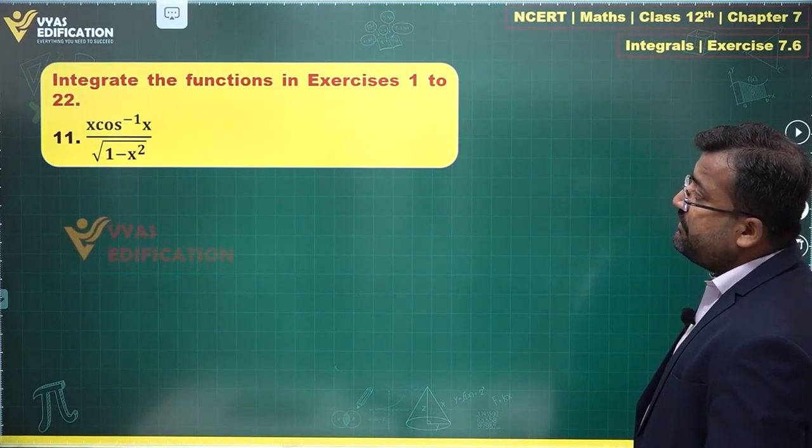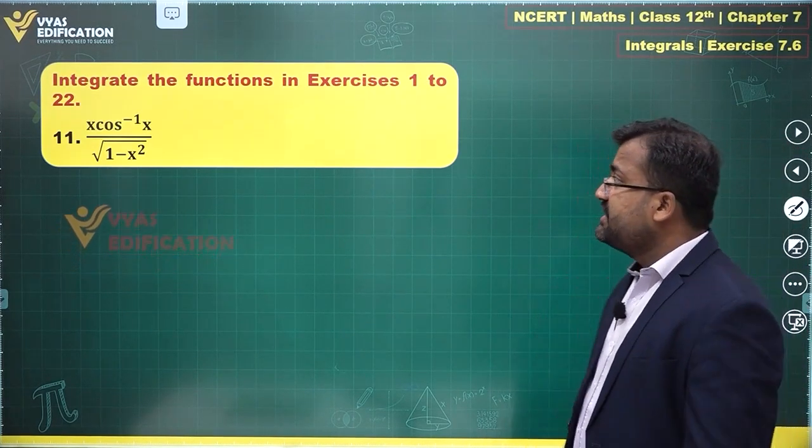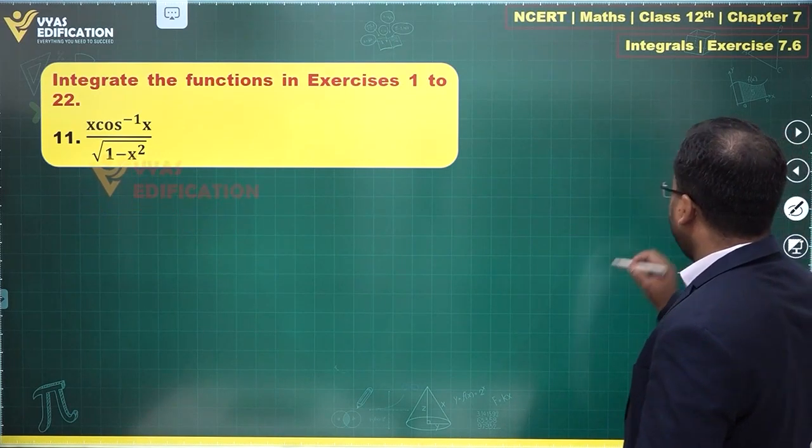In the 11th question, we have x cos inverse x upon under root of 1 minus x square. How do we handle this?